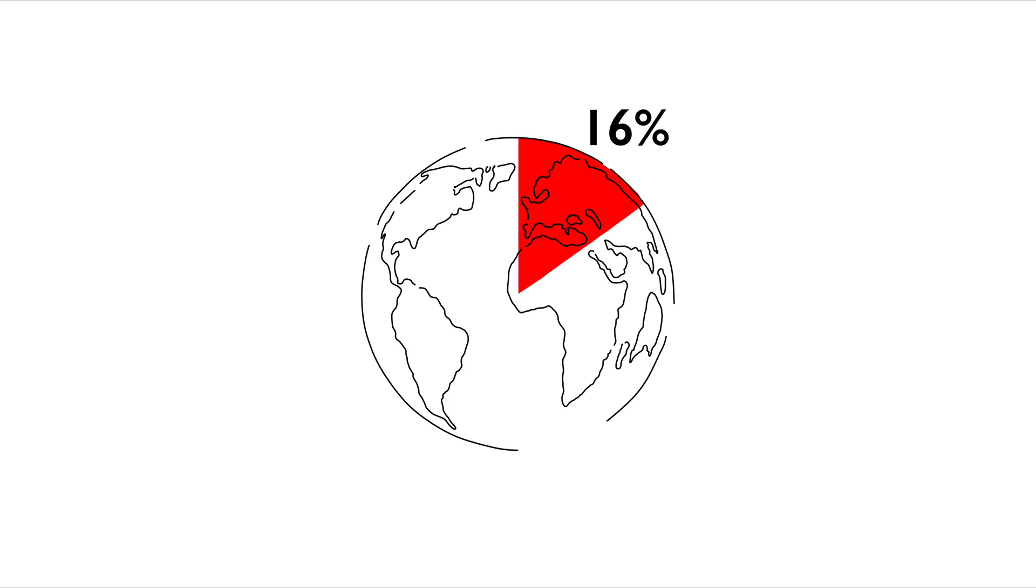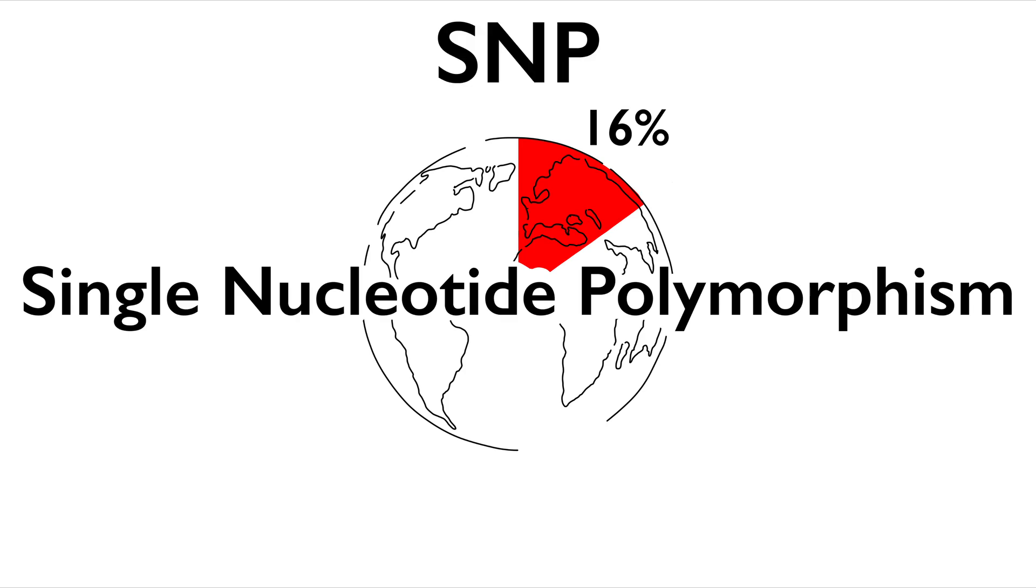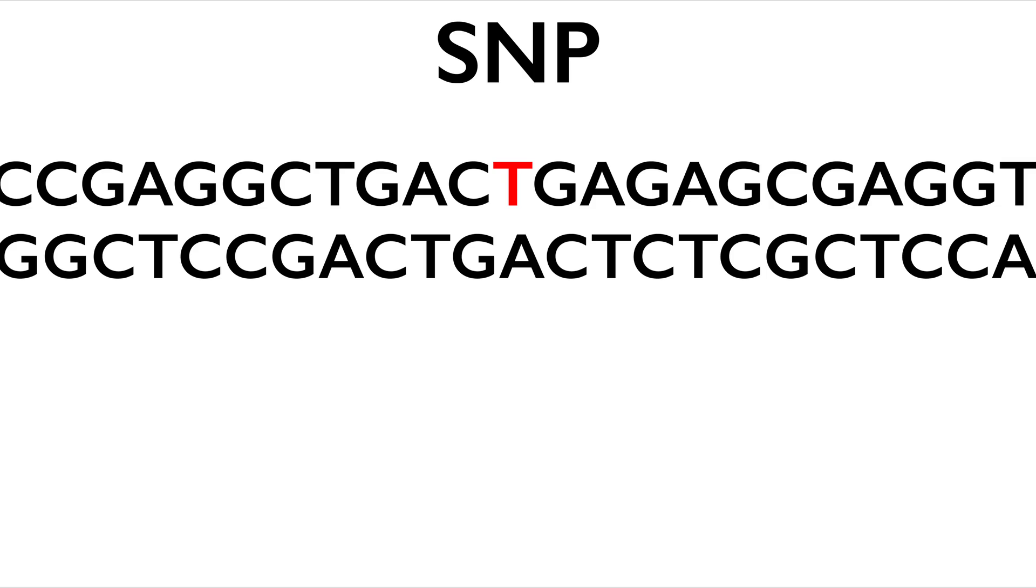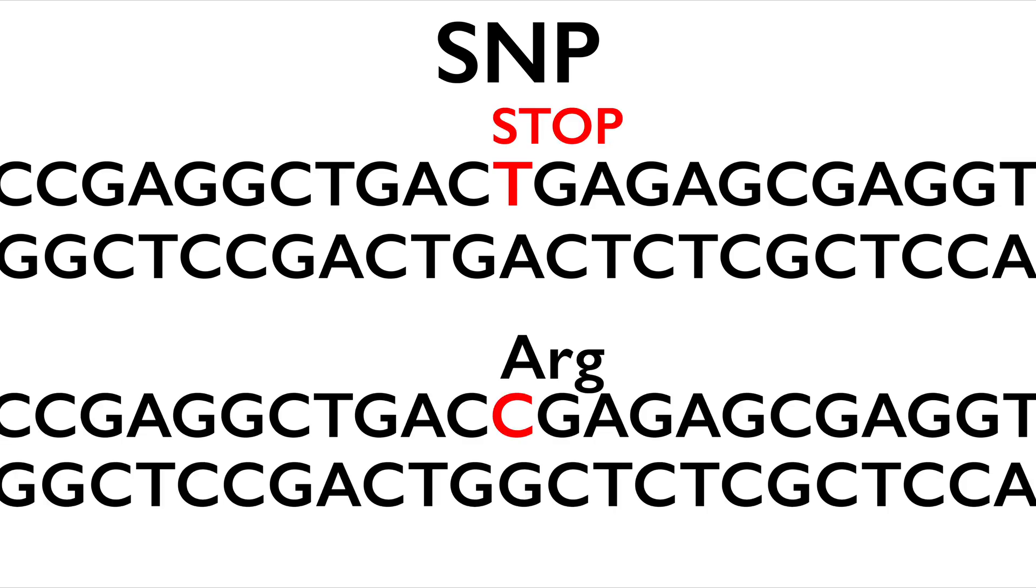Researchers found that roughly 16% of the world have a single nucleotide polymorphism, or SNP for short, in exon 16 of the gene. This results in a premature stop codon instead of the amino acid arginine, making a shortened, highly unstable version of the ACTN3.